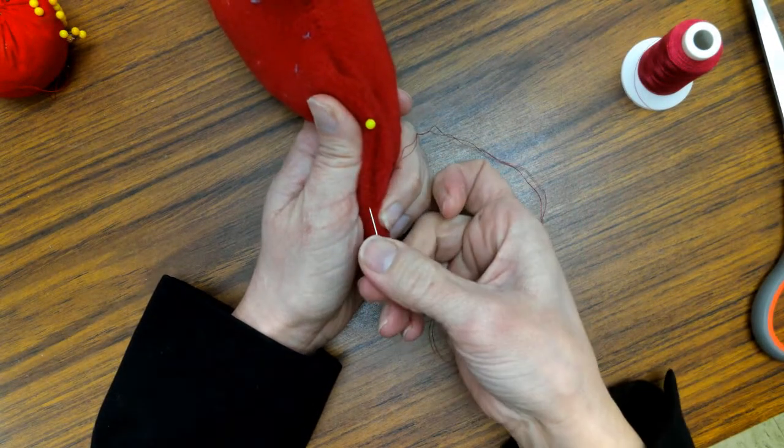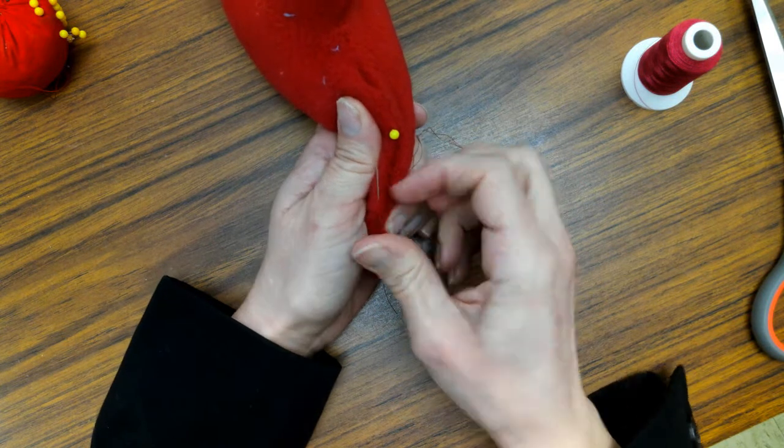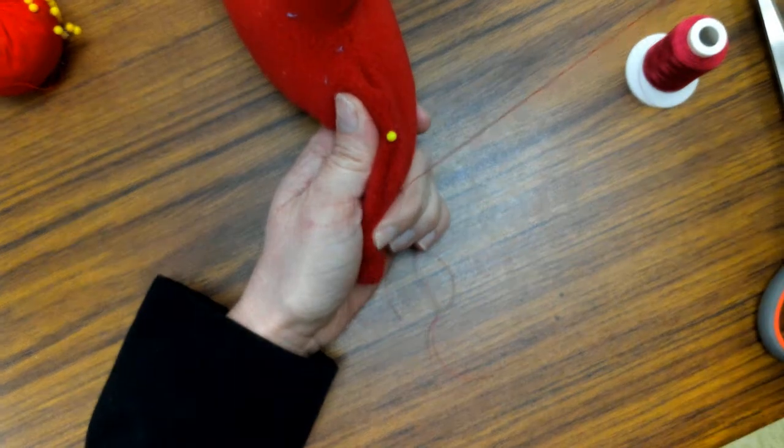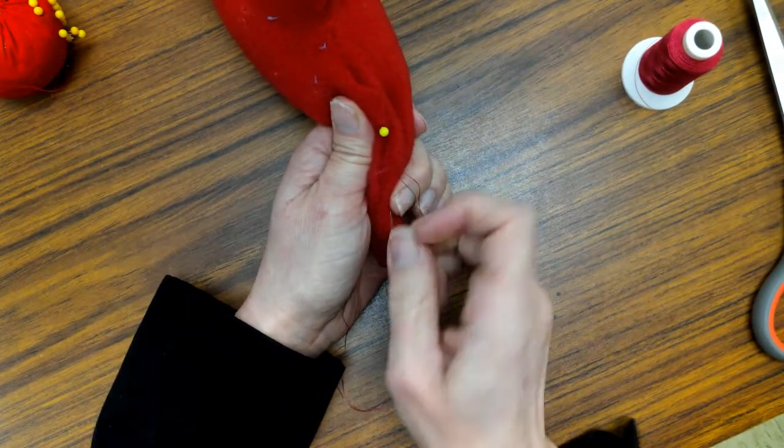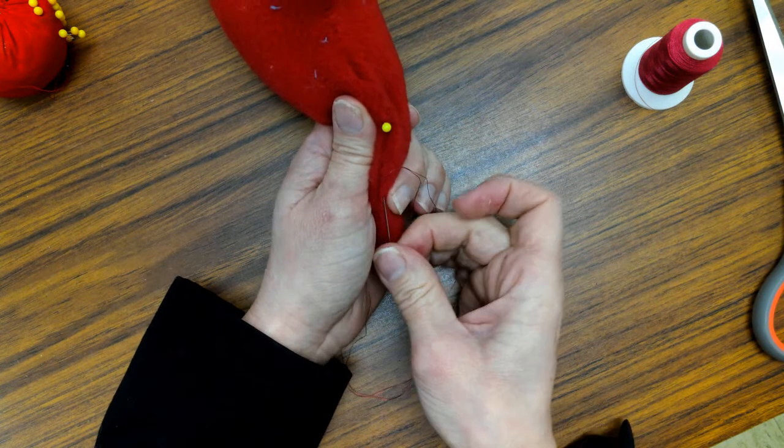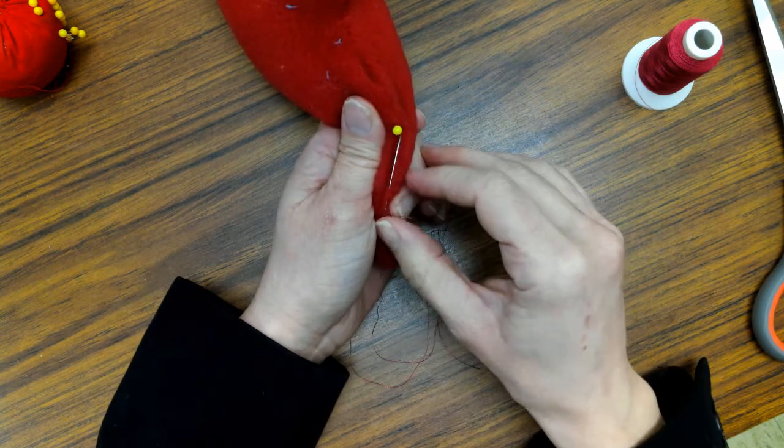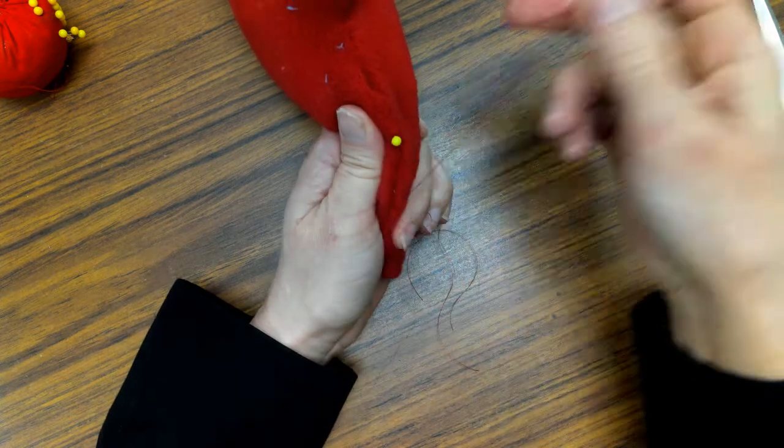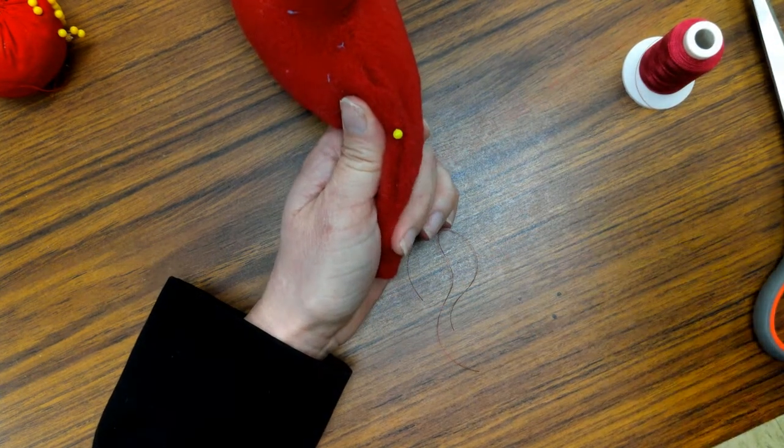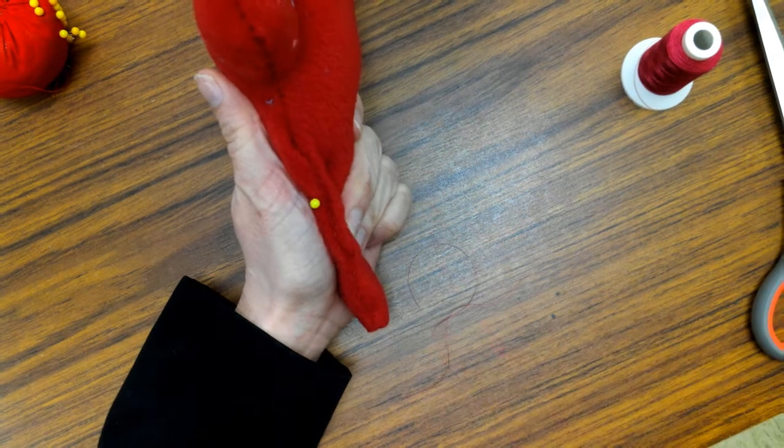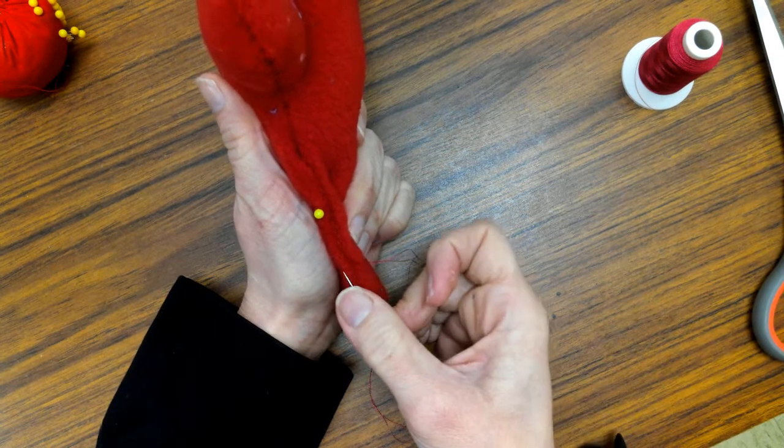Now, the closer together that you make these stitches, and the smaller you make them, the more invisible they're going to be, and the better they're going to hold. Pull it tight. Just like that. In and out. And I'm going to do this all the way to the end.